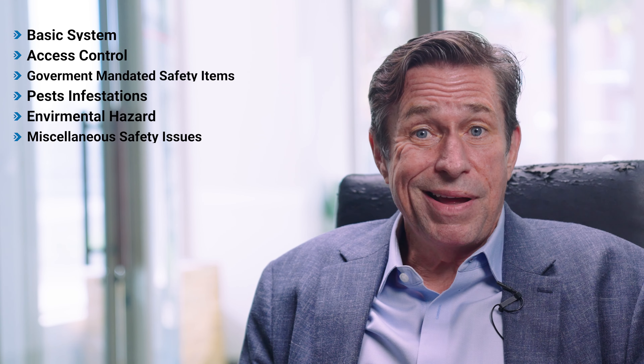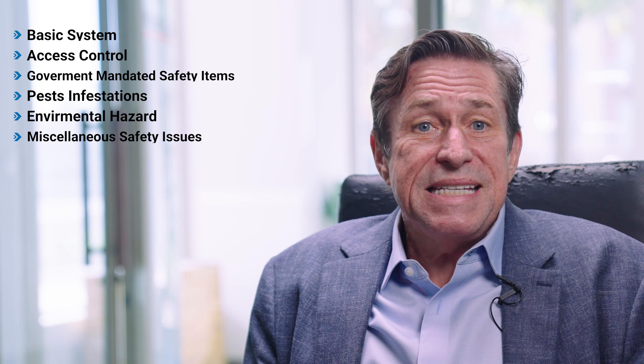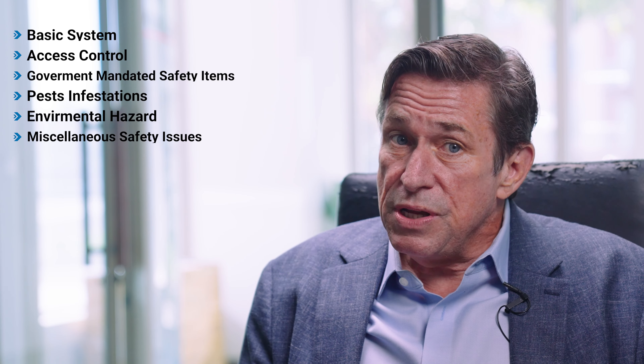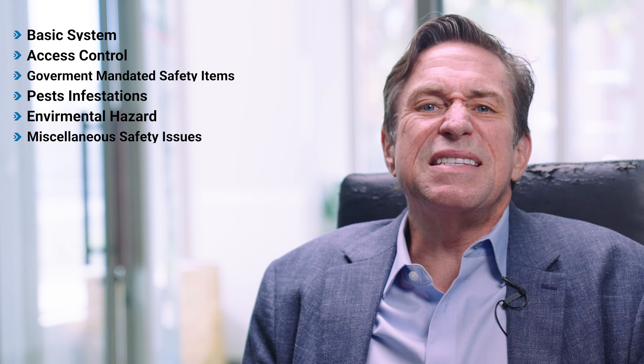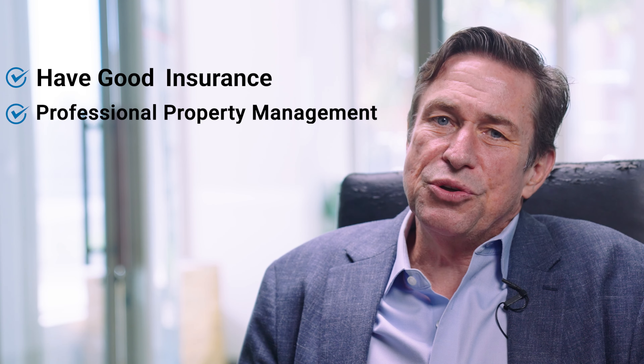In California, a rental property owner has the duty to provide a safe and habitable property. This includes the basic systems, access control, government mandated safety items, pest infestations, environmental hazards, and miscellaneous safety issues. You don't want to cut corners with safety — this is true even for your problem tenants. Of course, you will want to make sure you have good insurance, and you may want to consider professional property management.